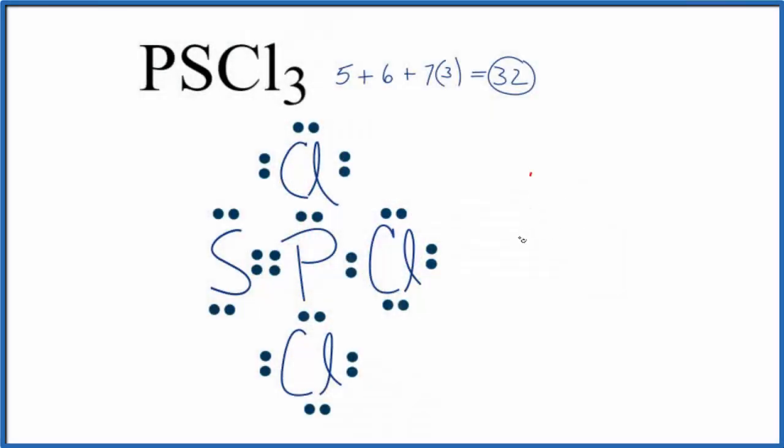We could also use the AXE notation to figure out the molecular geometry. A is the central atom, the phosphorus. X is the number of atoms bonded. We have 1, 2, 3, 4. And E, the lone pairs. There aren't any lone pairs, so we'll just write 0. So if you look up AX4 on a table, you'll see that it's tetrahedral. The molecular geometry is tetrahedral.